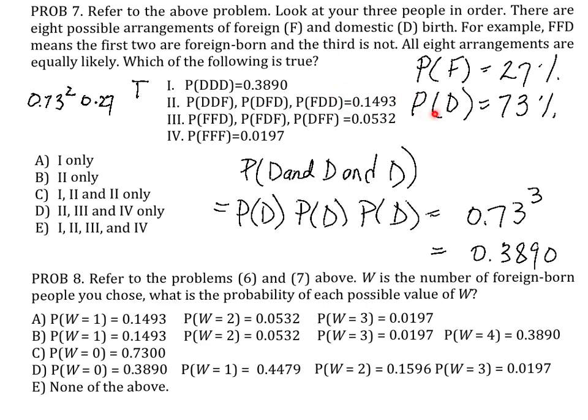And that would be true for all these possible arrangements, because in each of them there's two domestic and one foreign-born.